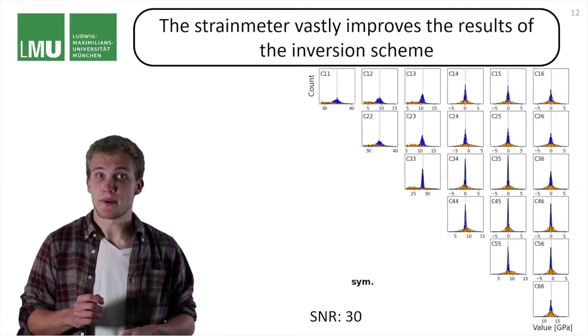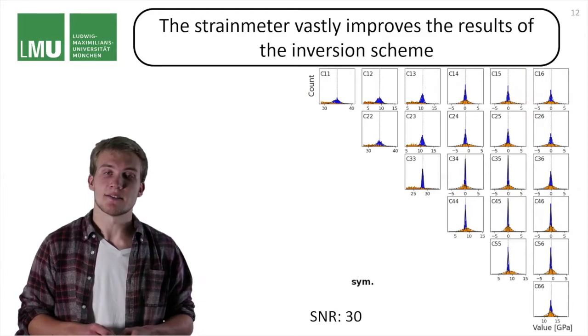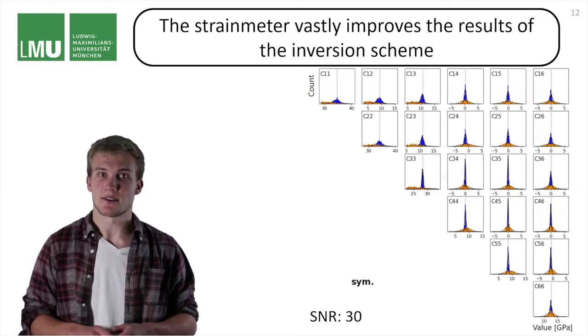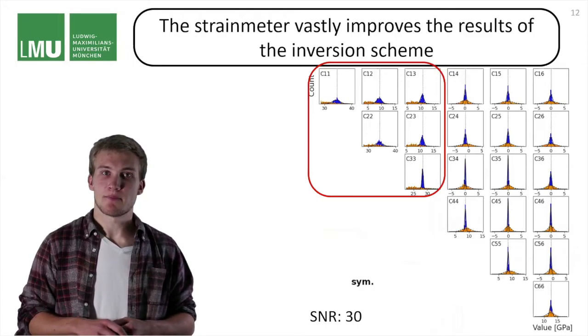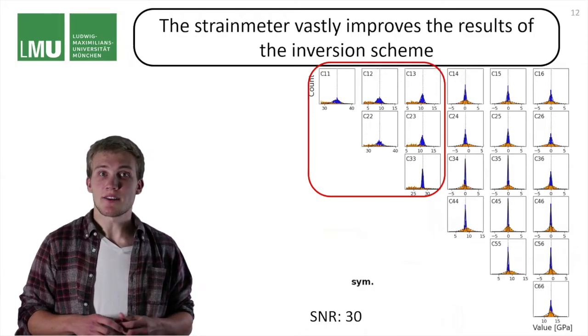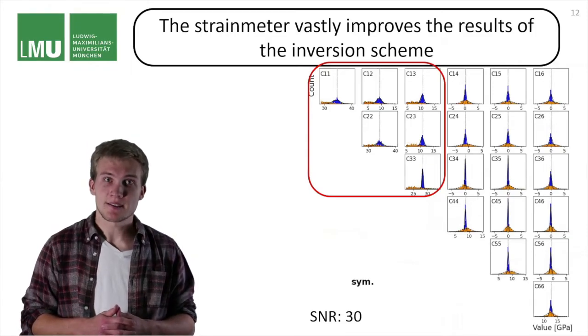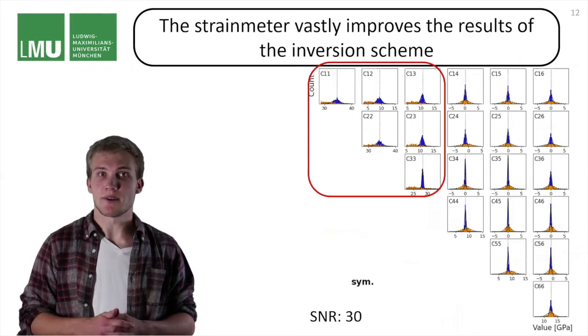This is because the P wave velocity is sensitive to the entire elastic tensor. The most drastic effect can be seen in the upper left panel, where we had a lot of trouble before. But in the strain case, you can see clear parameters.